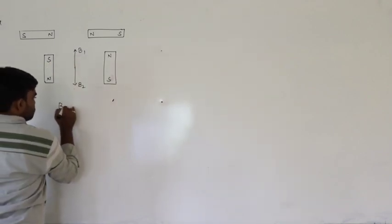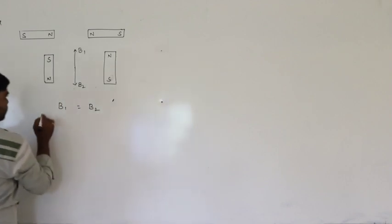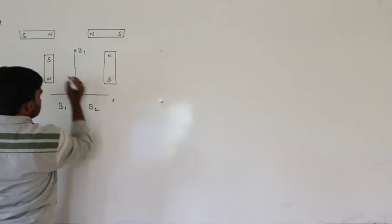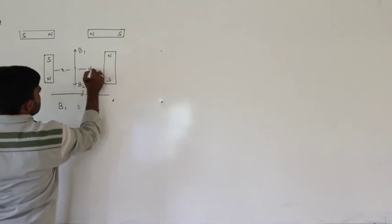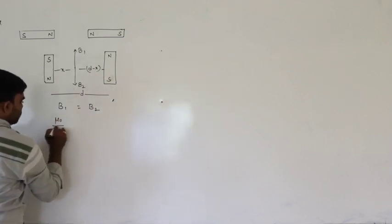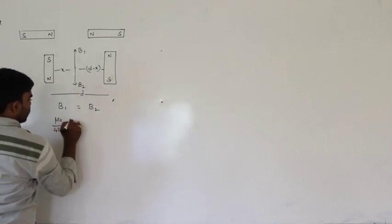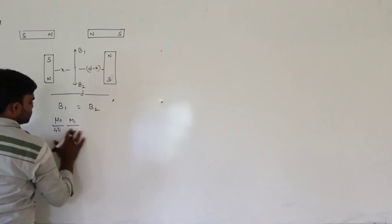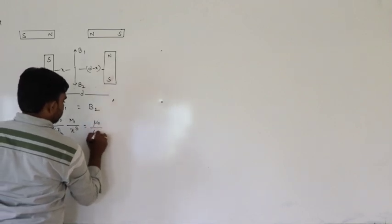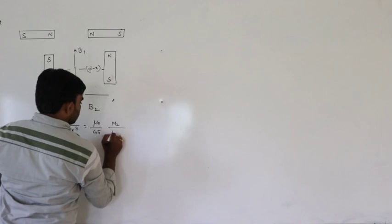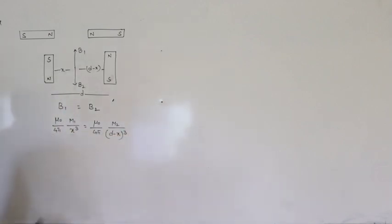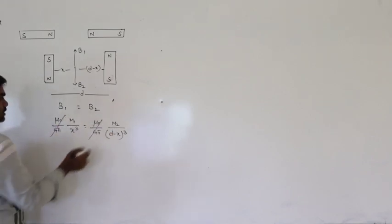The null point exists where B1 equals B2. Let the total distance between the two magnets be D, with the null point at distance X from one magnet and D minus X from the other. So B1 = μ₀/4π × M1/X³ equals B2 = μ₀/4π × M2/(D−X)³. The μ₀/4π cancels on both sides.